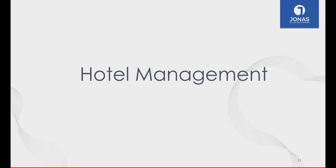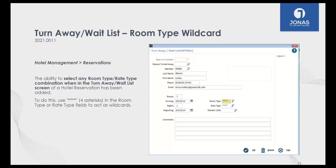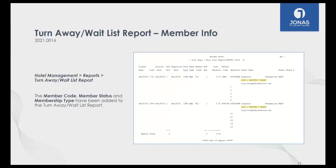Kicking over to Greg for additional JCM modules. We'll start with the Hotel module. The first thing is the Turn Away / Wait List. Previously when adding someone to the wait list for a hotel room, you had to choose a specific room type or rate type. Now, if you put four asterisks in that field, the member will be on the wait list for any room that becomes available — not a specific room type, just the next one that opens up.